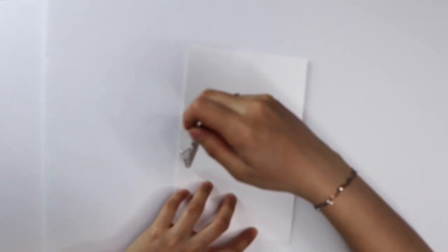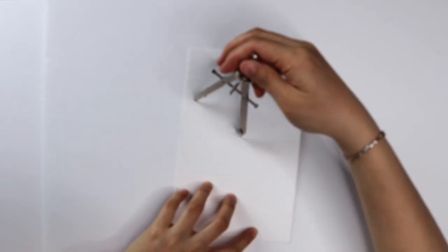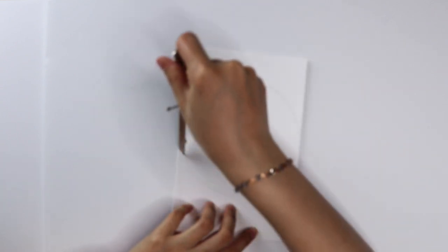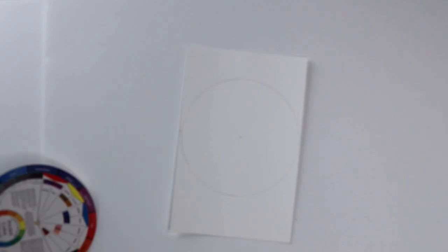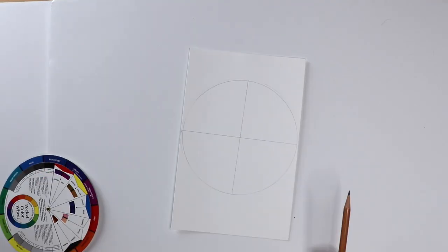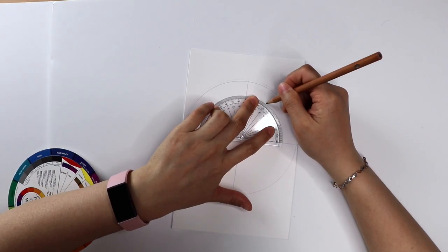So when you have everything ready, let's get started. First, use your compass to draw a circle on the paper. Then use a ruler, pencil, and protractor to carefully divide the circle into 12 parts.